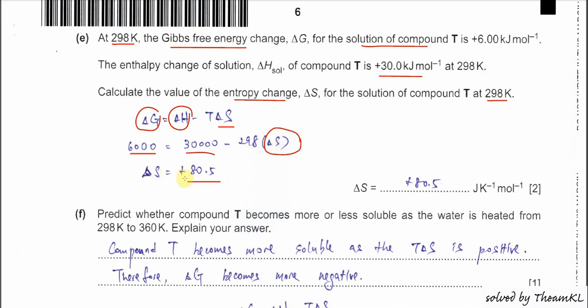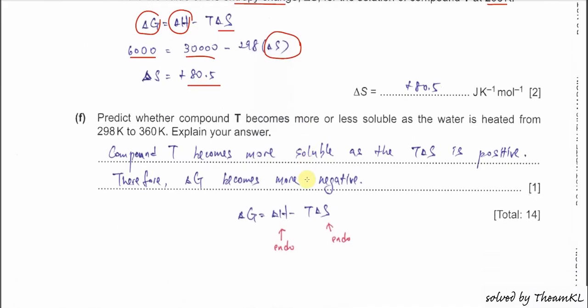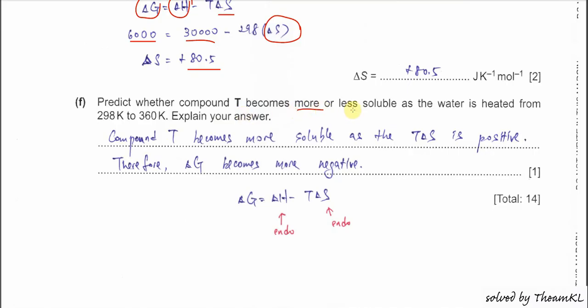The entropy change ΔS = +80.5 J/mol/K. This positive value means that after dissolving, the randomness of the system increases — the ions move more freely in solution compared to the fixed positions in the solid lattice. The question then asks whether compound T becomes more or less soluble as water is heated from 298 K to 360 K.